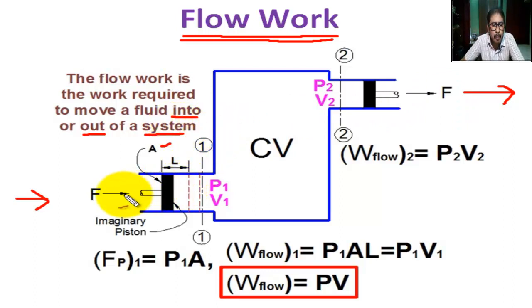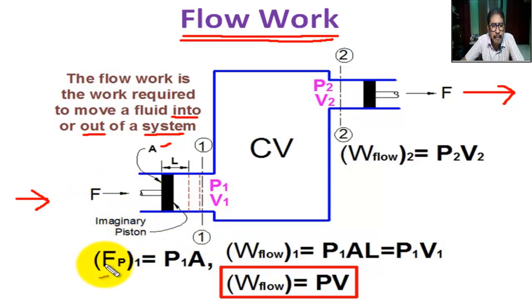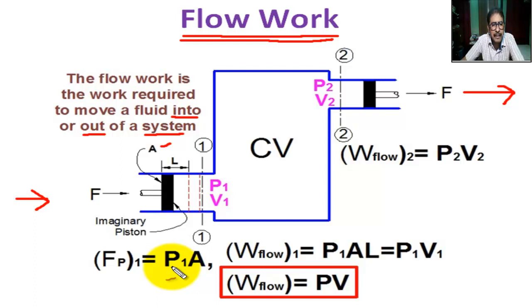Thus the work done in pushing the fluid element across the boundary is the flow work. At section 1-1, the pressure force F_P1 equals P1, where P1 is the pressure acting in this direction.